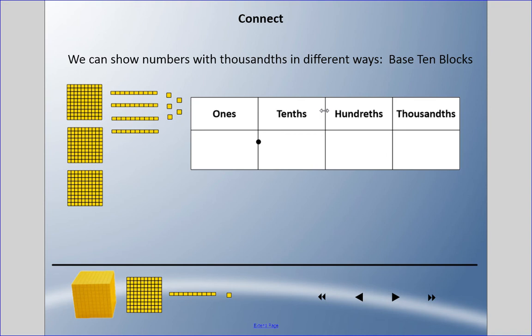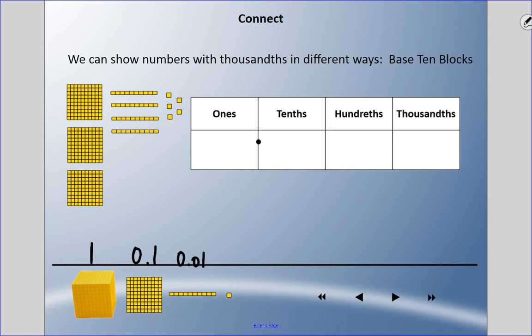When talking about thousands, a thousand small cubes make up one whole, so we have to shift our thinking. If you're used to base-10 blocks, the three-dimensional cube you might consider as the 'thousand block' is now considered one whole. The flat is now one tenth, because ten of those make up one whole. The rod is one hundredth, because a hundred of those fit into the whole. And the small cube is one thousandth — a thousand of these go into the whole.